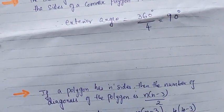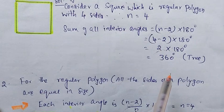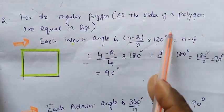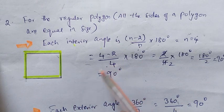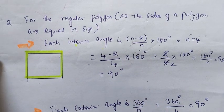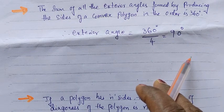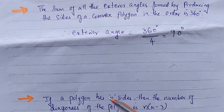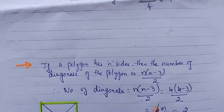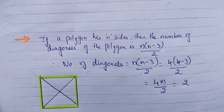To summarize: first, the sum of all interior angles of a square with 4 sides is 360 degrees. Second, all the sides of the polygon are equal, interior angles are 90 degrees and exterior angle is 90 degrees. A square has 2 diagonals. Thank you. For more videos, please subscribe to our channel.